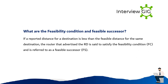What are the feasibility condition and feasible successor? If a reported distance for a destination is less than the feasible distance for the same destination, the router that advertised the route is said to satisfy the feasibility condition and is referred to as a feasible successor.